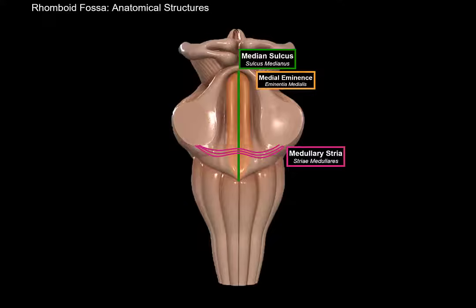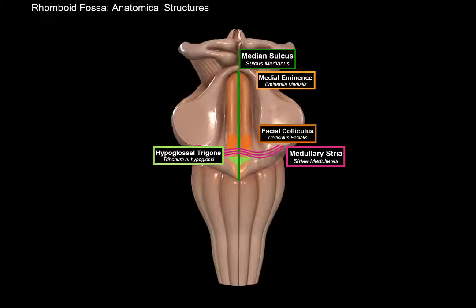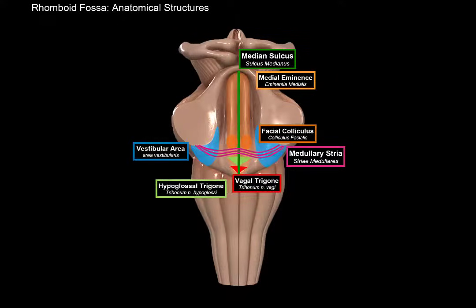Usually the upper part is pons and the lower part is medulla. Above the medullary striae, there is an elevation on either side of the median sulcus called the facial colliculus — these are elevations made by fibers leaving the facial nucleus as they loop around the abducens nucleus. Below the medullary striae, you'll find the hypoglossal trigone, where the nucleus of the 12th cranial nerve is located, and the vagal trigone, where the vagal part of the nucleus ambiguus is located. On the angle of the rhomboid fossa, you'll find the vestibular area, where the vestibular nuclei are situated, responsible for balance.